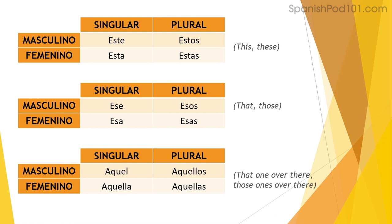We have four options for each of the three distance levels — depending on gender and number. Don't forget the translations: these, that, those, that one over there, those ones over there. Let's practice pronunciation. Please repeat after me: este, esta, estos, estas.